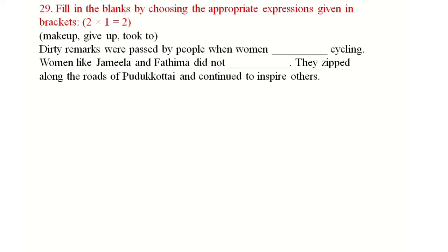Next, fill in the blanks by choosing appropriate expressions given in the bracket. This is the phrasal verbs section for 2 marks. Dirty remarks were passed by people when women took to cycling. Women like Jamila and Fatima did not give up. They zipped along the roads of Pudukote and continued to inspire others.